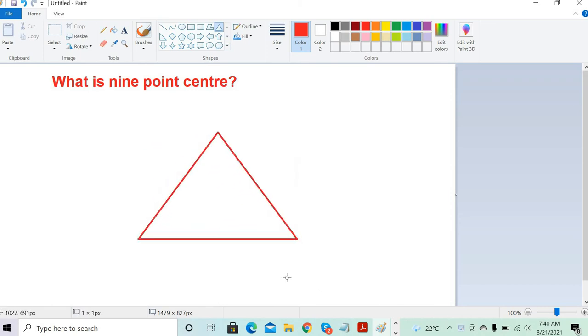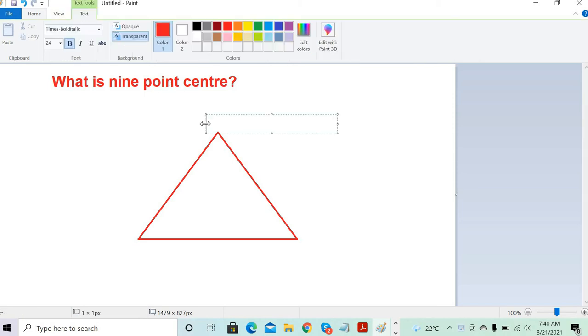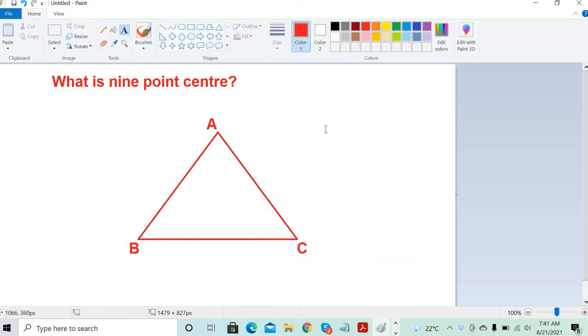To understand this, let's draw a triangle and label it as ABC. The nine-point center is a kind of point just like the ortho center and the circum center. In order to understand the nine-point center, we need to know what the ortho center and circum center are. Let's try to understand that.